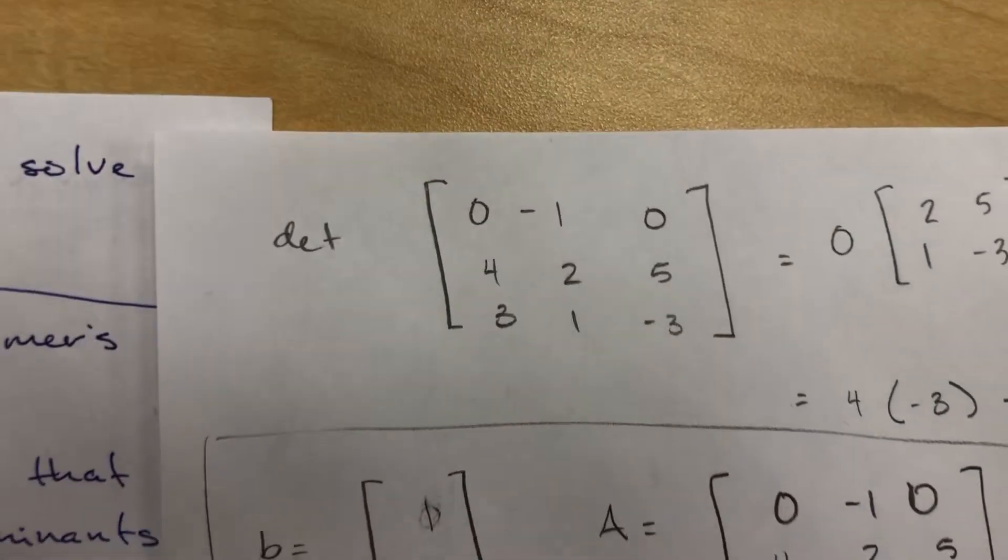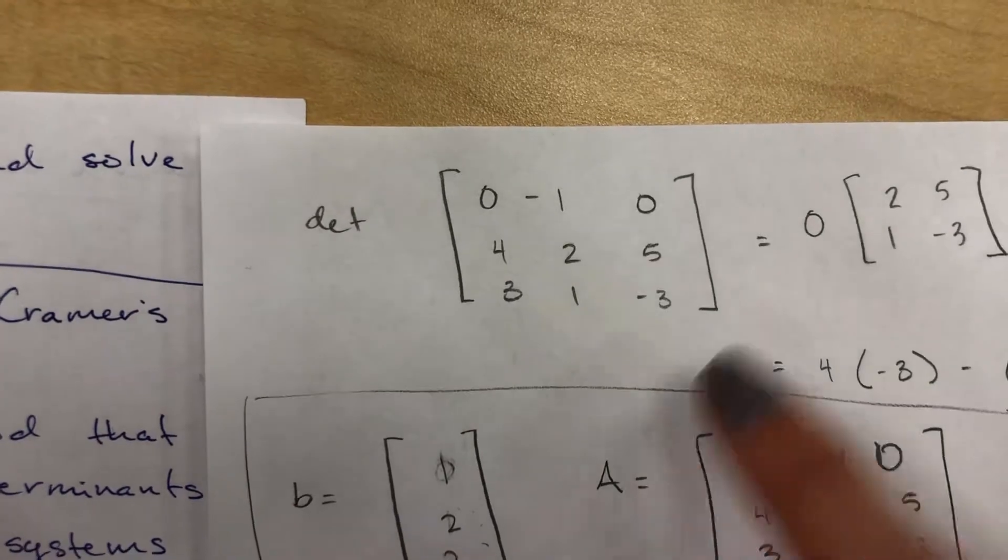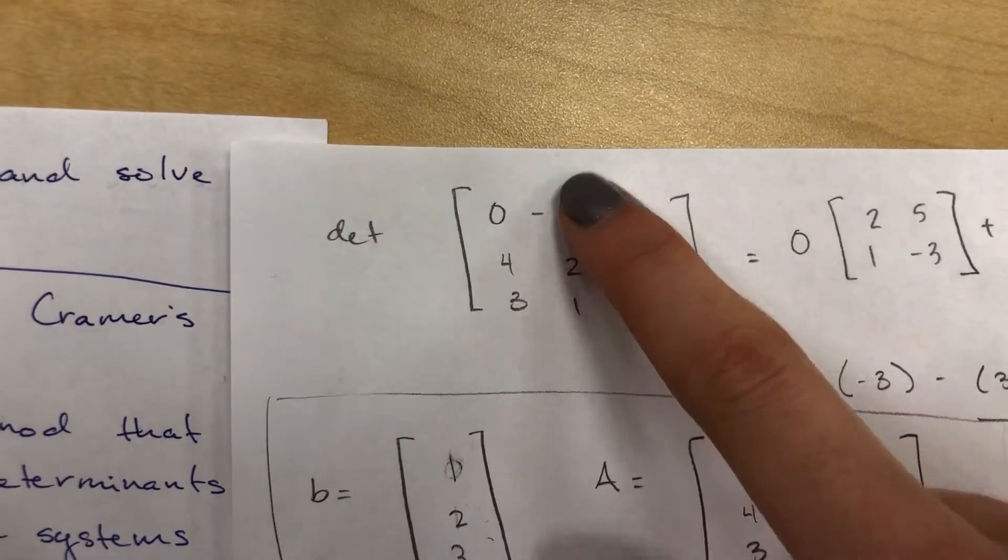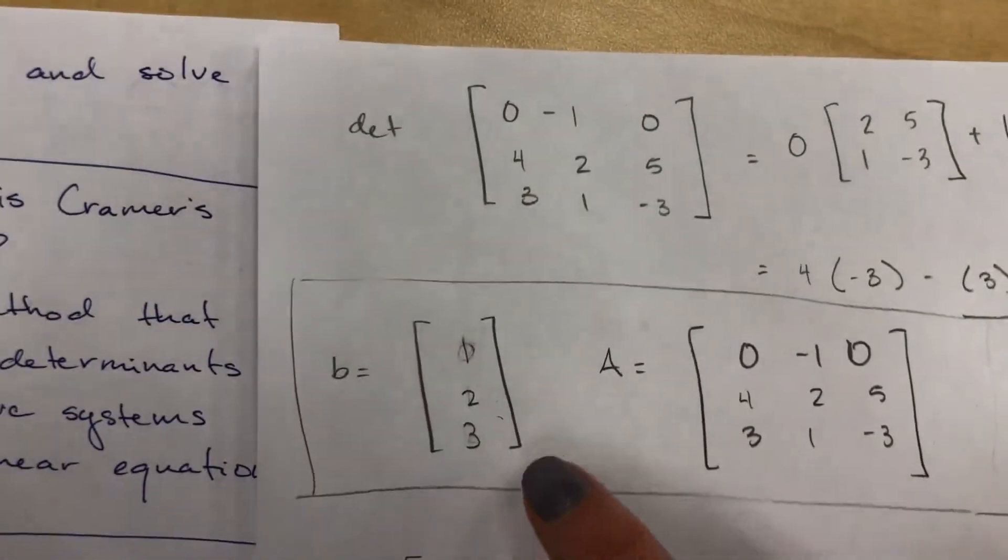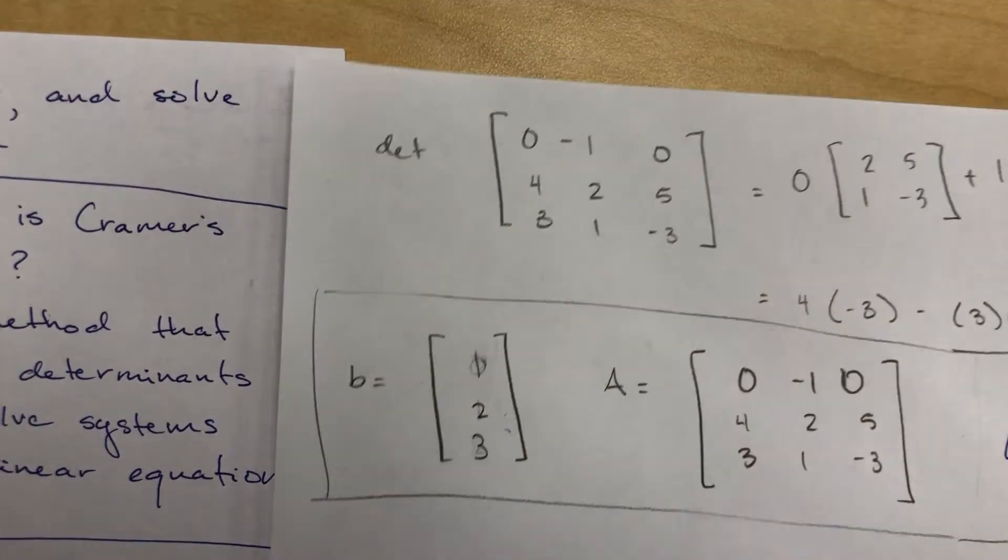Taking a look at an example with A equals this matrix and B equal to the vector 1, 2, 3. To use Cramer's rule you first solve for the determinant of A using row expansion.